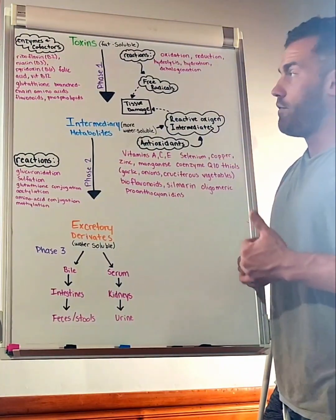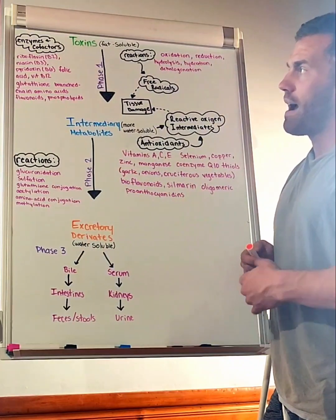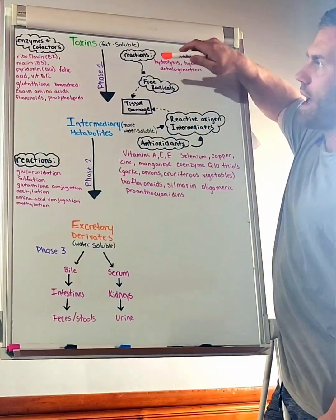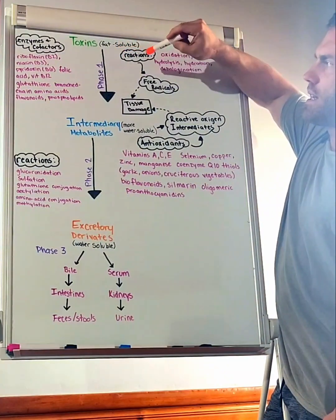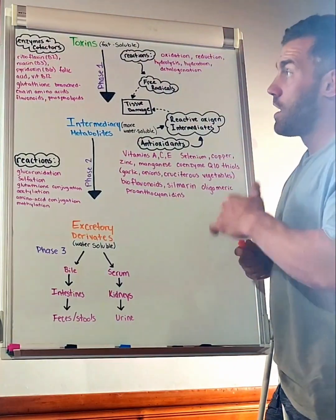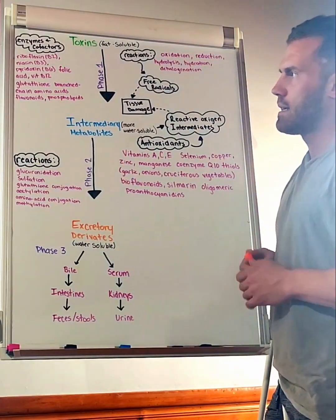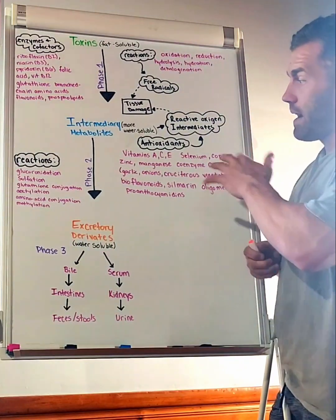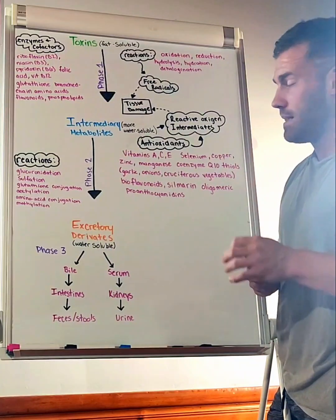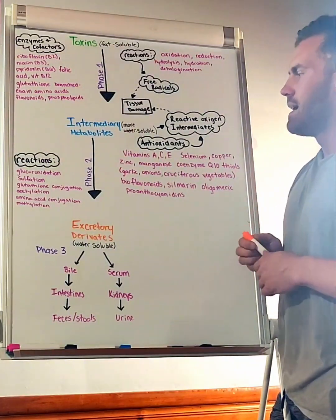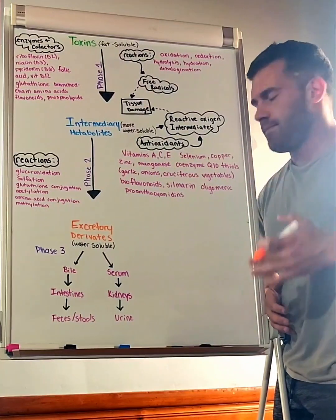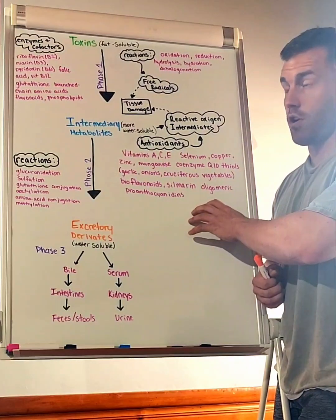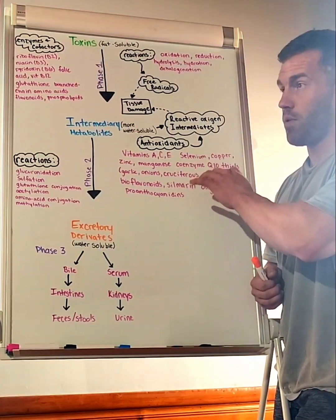During these phases, we have a number of nutrients and cofactors and enzymes that are needed. In phase one, you'll see here B2, B3, B6, folic acid, B12—a lot of B vitamins, glutathione for antioxidant, and amino acids and flavonoids. In phase two, we have vitamins A, C, and E, selenium, copper, zinc, manganese, CoQ10, and some others. We require these cofactors for these phases to occur, because if we don't have them, these phases will occur slowly or sluggishly.